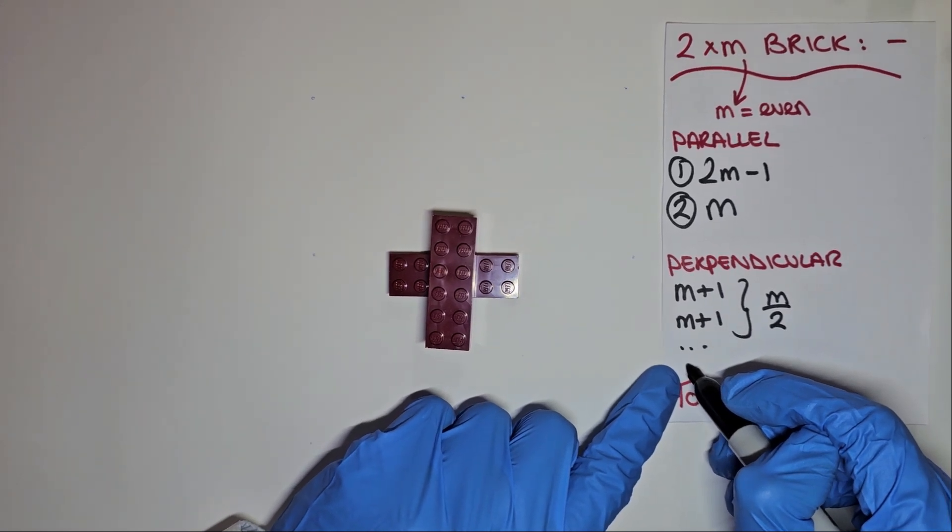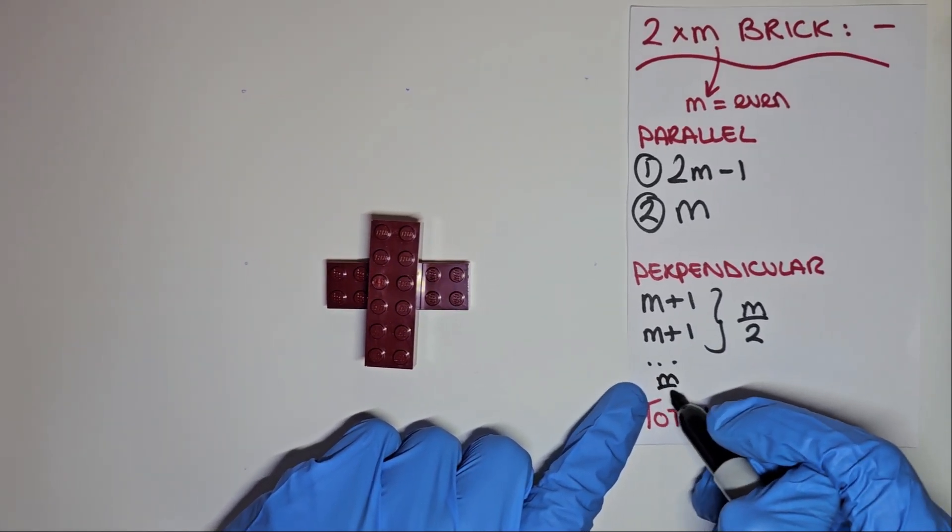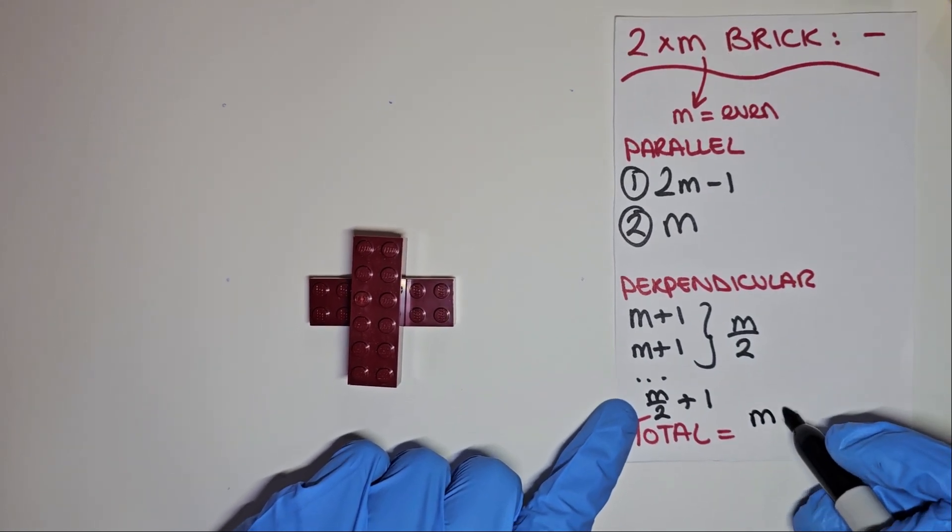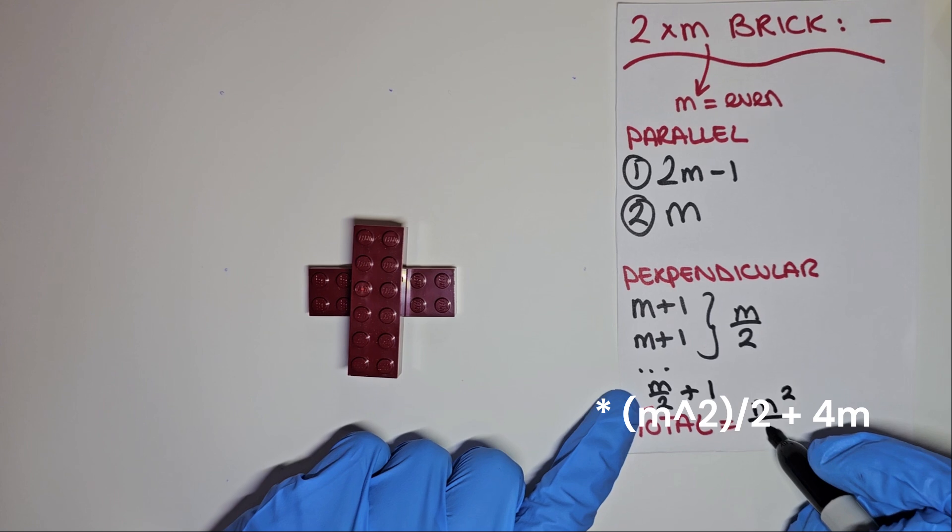In total, summing up both the parallel and perpendicular combinations, in general, we get m squared over 4 plus 4m as the general pattern. This is a nice pattern for these LEGO bricks.